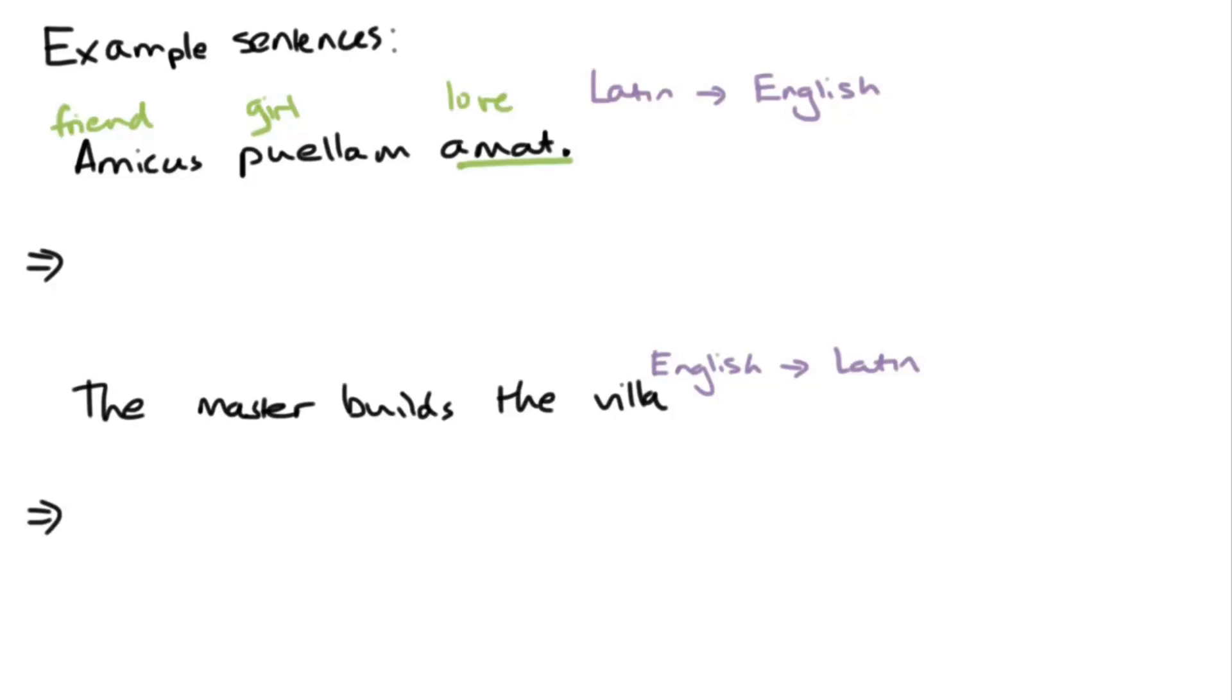Now, amicus is in the nominative case. If you think back to what we just learned, dominus, dominus, dominum, domini, domino, domino, domini, dominos, dominorum, dominis, dominis. Amicus is the nominative singular. Therefore, it has to be the subject, because as we said, the nominative is for the subject. Then, we have puellam. Now, that M ending, we came across, and that is the accusative ending, if you recall. Therefore, if it's the accusative, we know that it must be the object. So, friend is the subject, girl is the object, and love is obviously the verb.